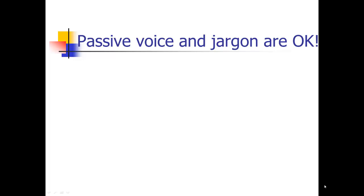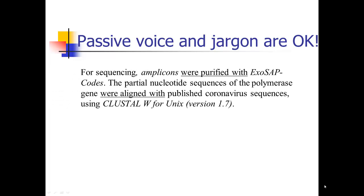So again, passive voice and jargon even is okay in the method section, unlike the rest of the manuscript where I'm going to tell you, use less jargon, use active voice. So, for example, this paper said, 'for sequencing, amplicons were purified with ExoSAP-Codes.' There's a lot of jargon, it's in the passive voice. 'Polymerase gene were aligned with published coronavirus sequences using CLUSTAL W for Unix.' All of that jargon is appropriate there. We need all of those details about specific technical details.